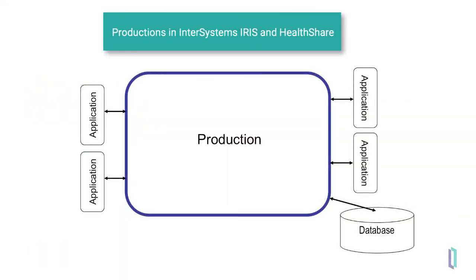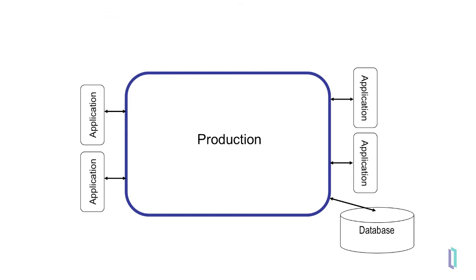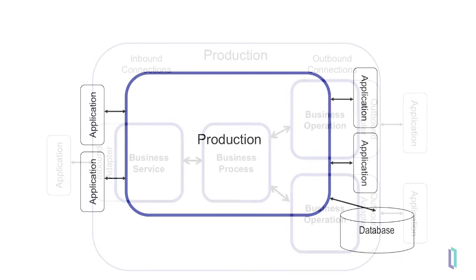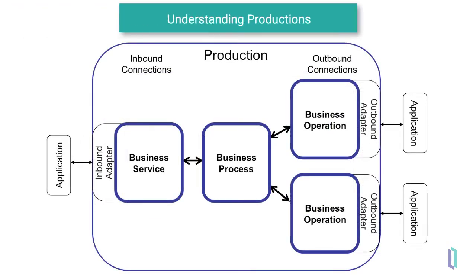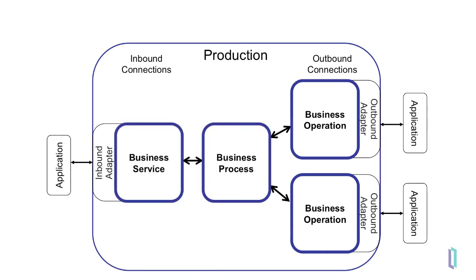An integration solution is known as a production. A production is designed to connect applications using a wide variety of technologies and protocols. A production is composed of the pieces that handle inbound and outbound connections, as well as the pieces that control the internal flow of information. These pieces are called business services, business processes, and business operations.